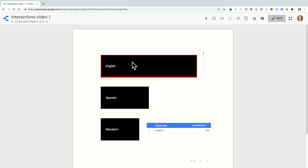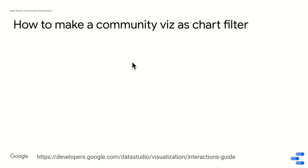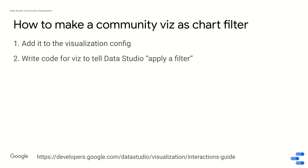So how do we configure that in community visualizations? To make a community viz act as a chart filter, you have to do two things. One, you have to add it to your visualization config. Two, you have to write code for the visualization to tell Data Studio to apply the filter and specify the parameters with which you're going to apply it.